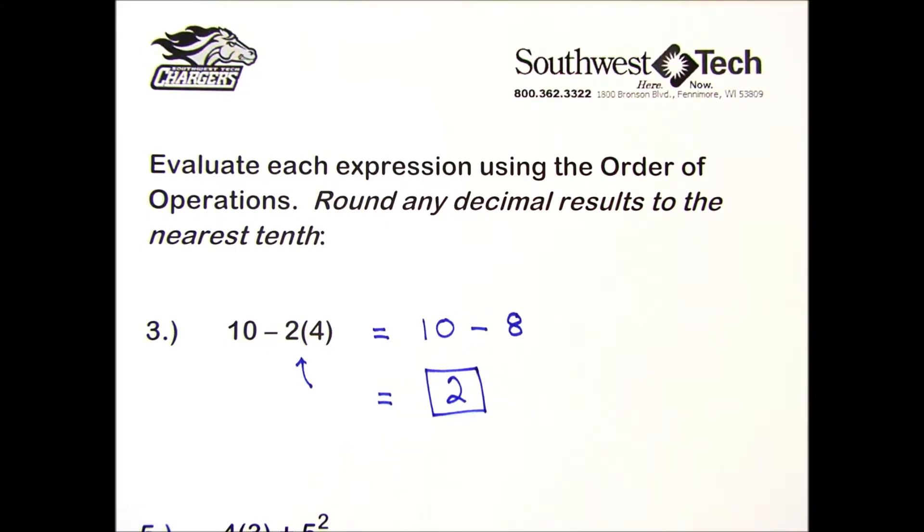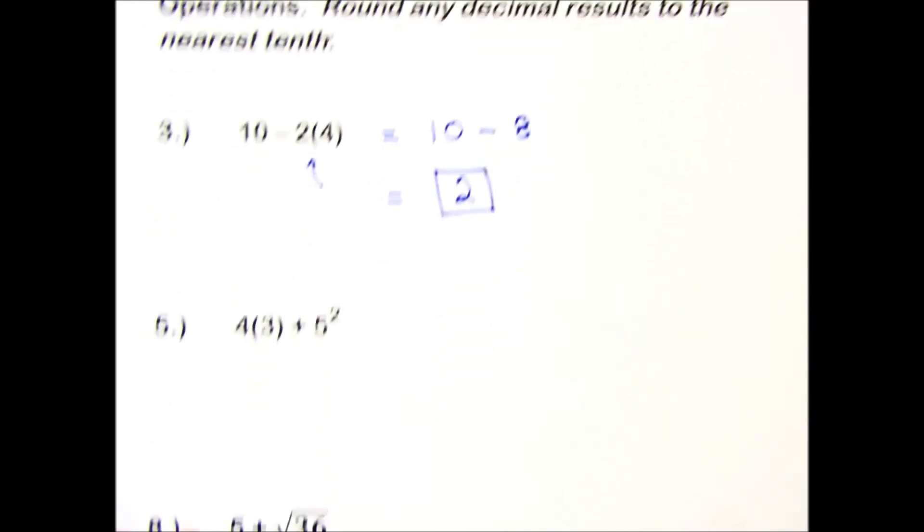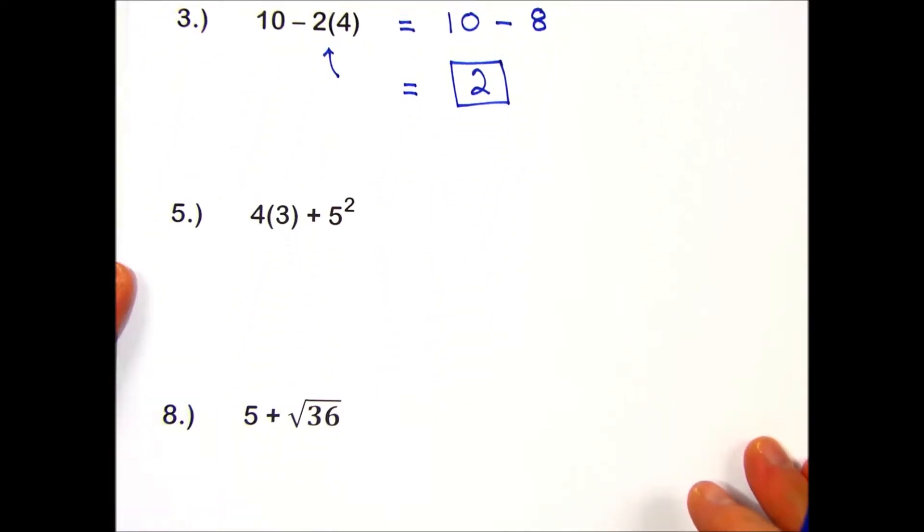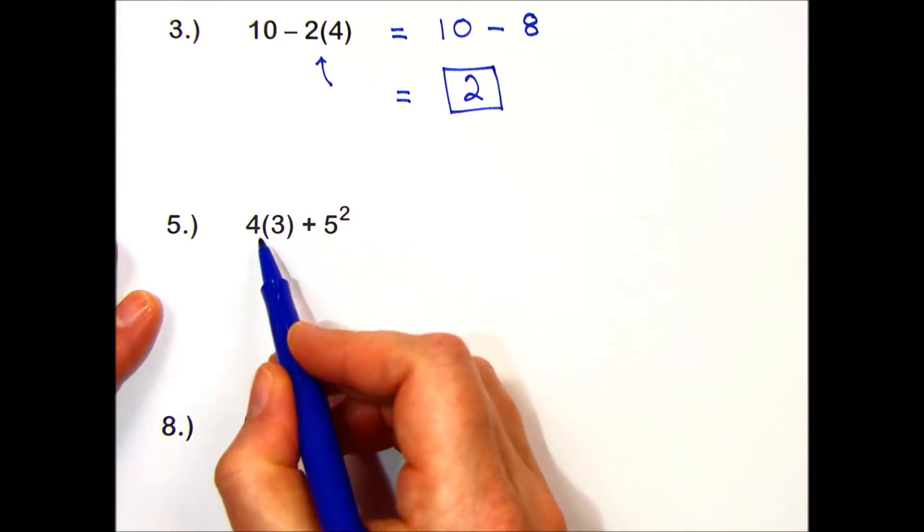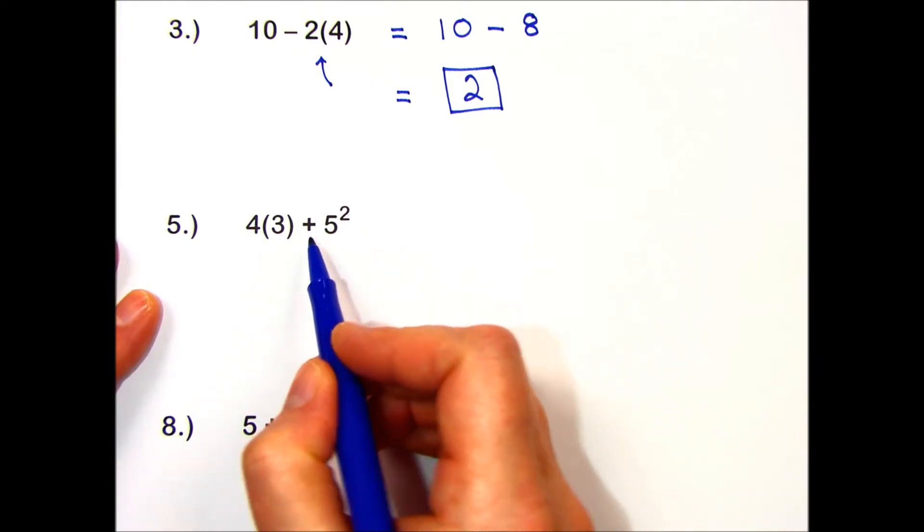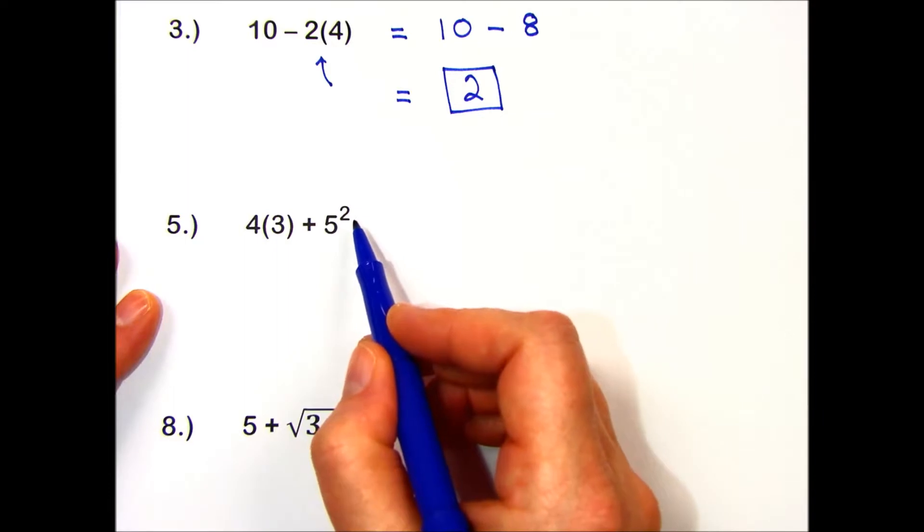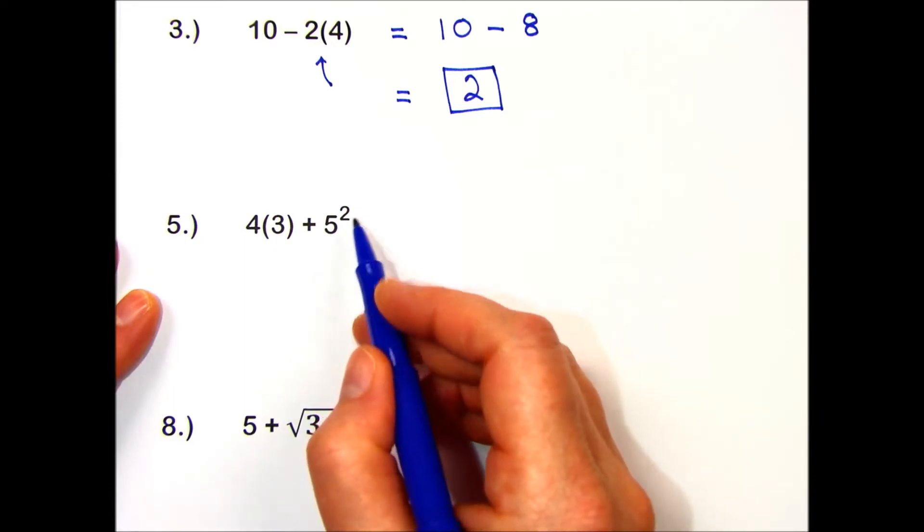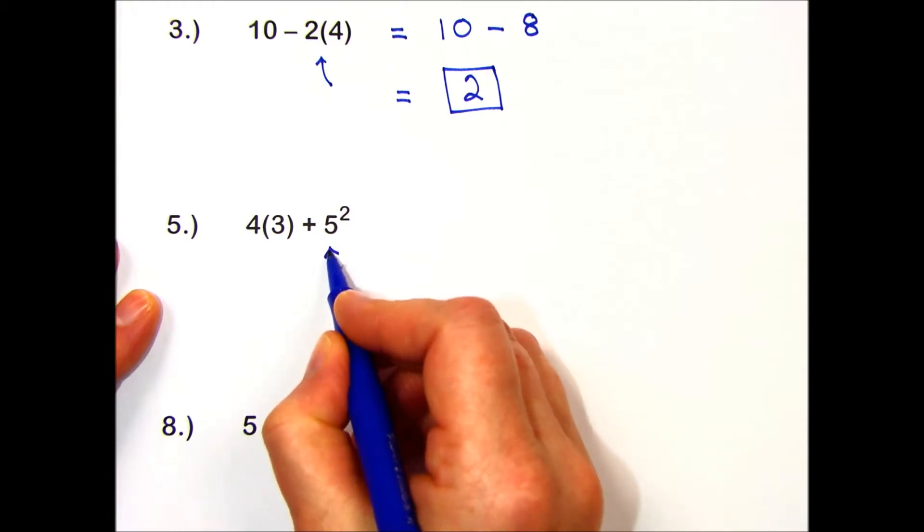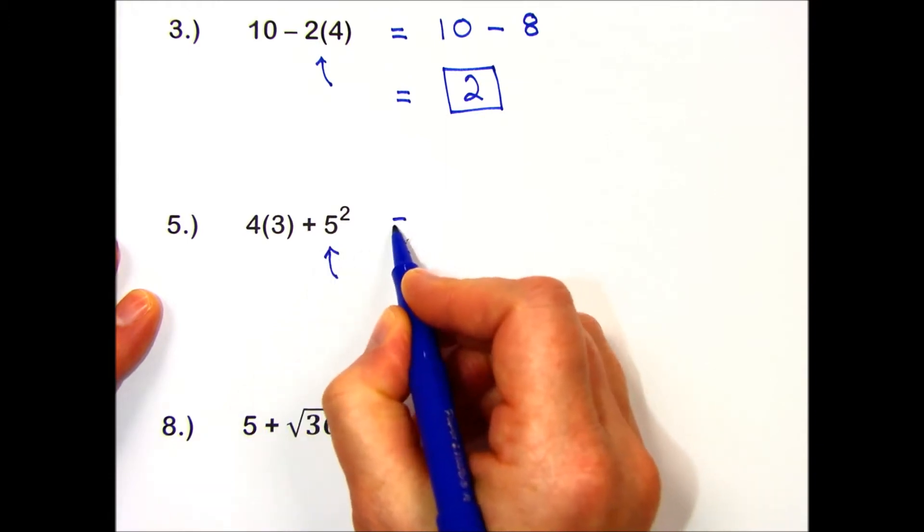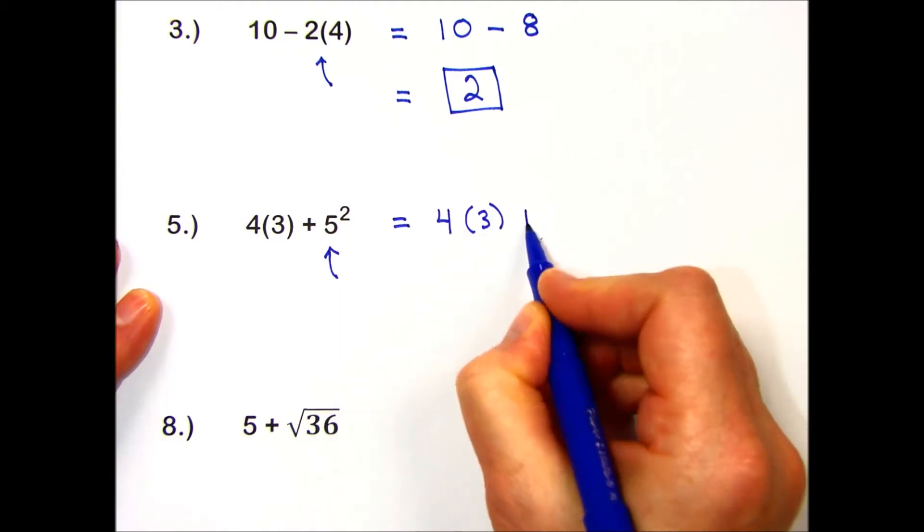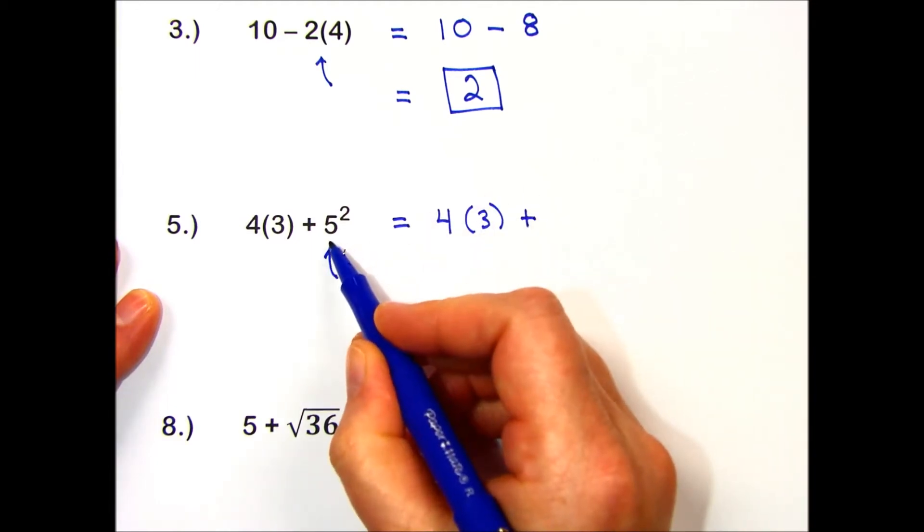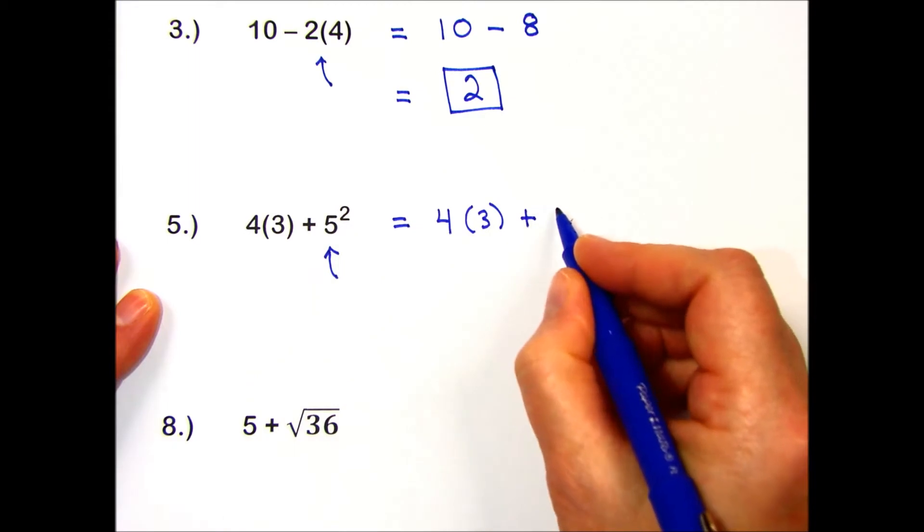Let's try a couple more together. Number 5: I see 4 times 3 plus 5 squared. According to my order of operations, this power needs to be performed first. I rewrite my expression: 4 times 3 with the result of this 5 squared, which is 25.